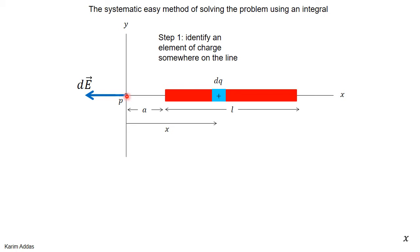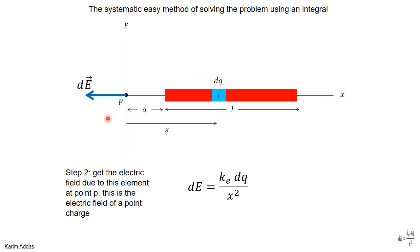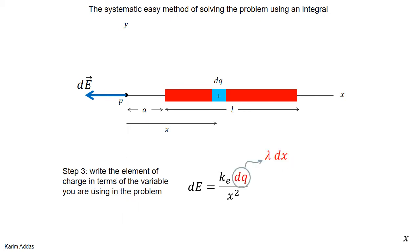This element of charge dq produces an electric field at point P which we call dE. Step two is to find what dE is. Treat this dq element as if it were a point charge, so you get ke times the charge over the distance squared. The distance is x, so you get ke·dq/x².